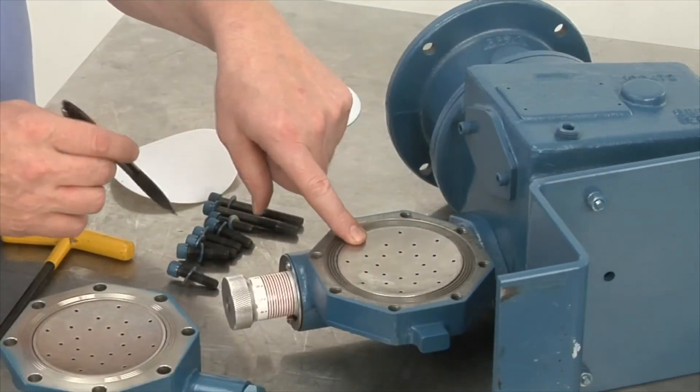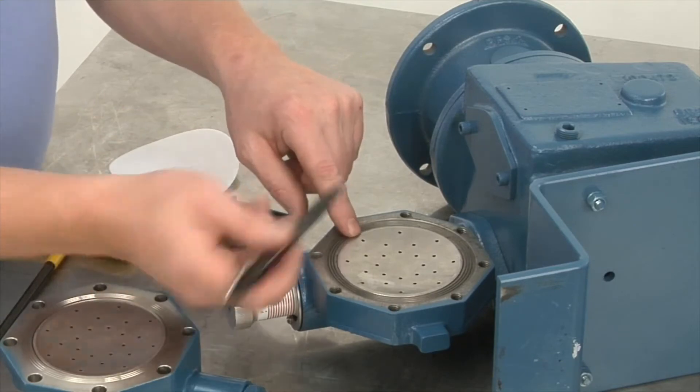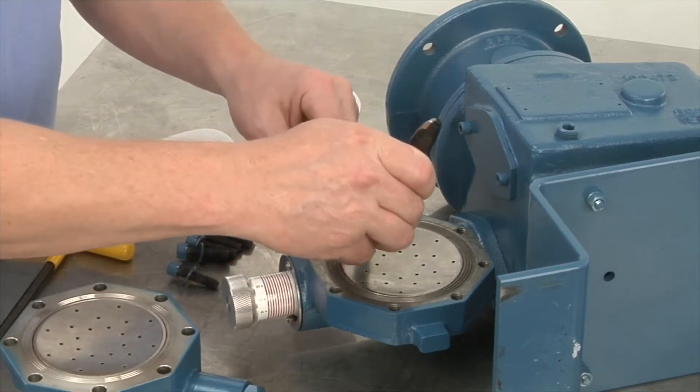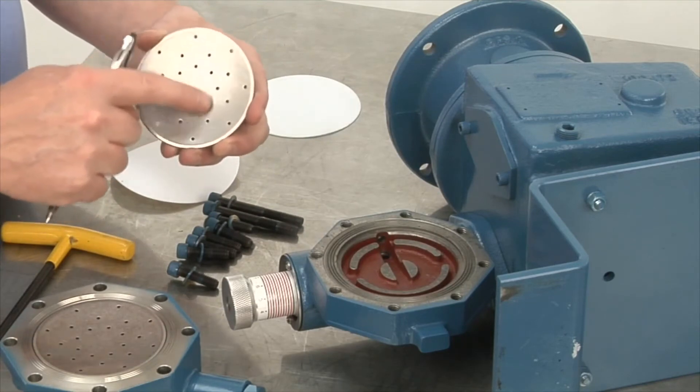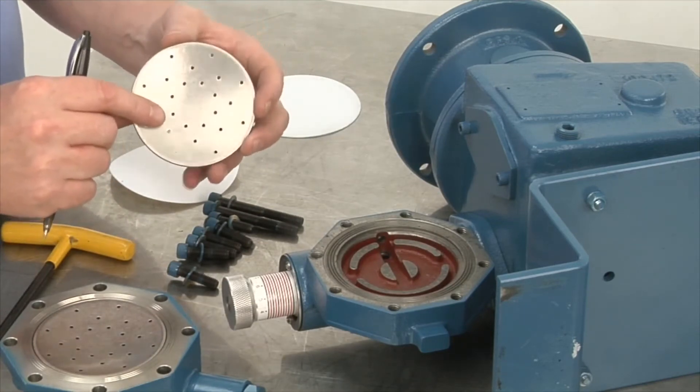Next you'll see the oil side backup plate. Just grab a pen or something small to get in the hole to get it out. Again check for cracks in between the holes, replace if necessary.